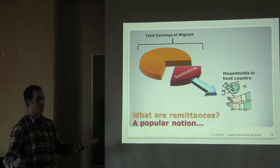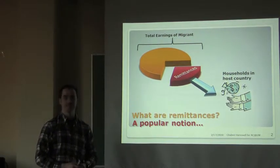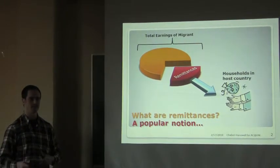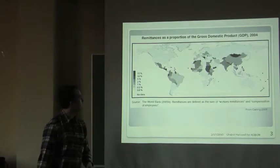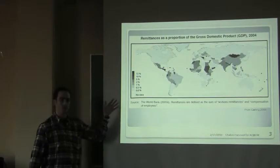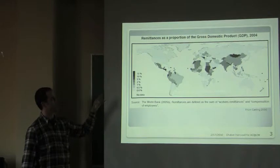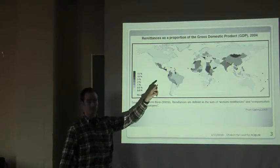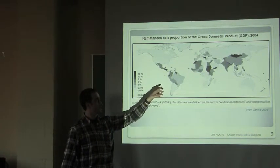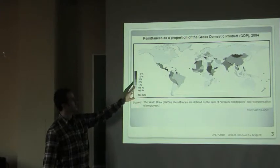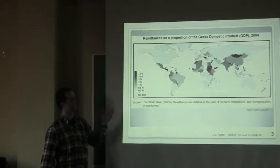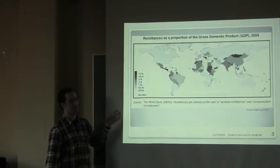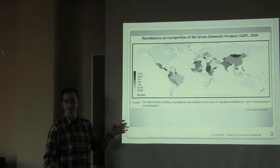Families were then able to pay for the very expensive food and water that was being sold on the black market. This map gives you a broader perspective of the macroeconomic importance of remittances in different countries as a proportion of gross domestic product in 2004. Darker colors represent a larger proportion of GDP explained by remittances. Does anyone see anything interesting about this map?